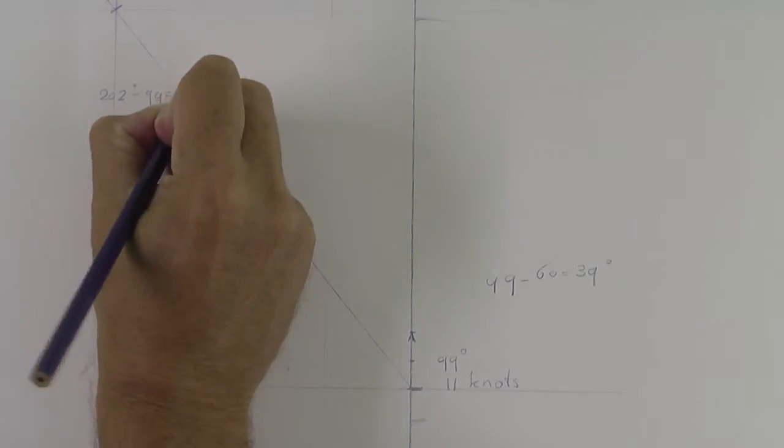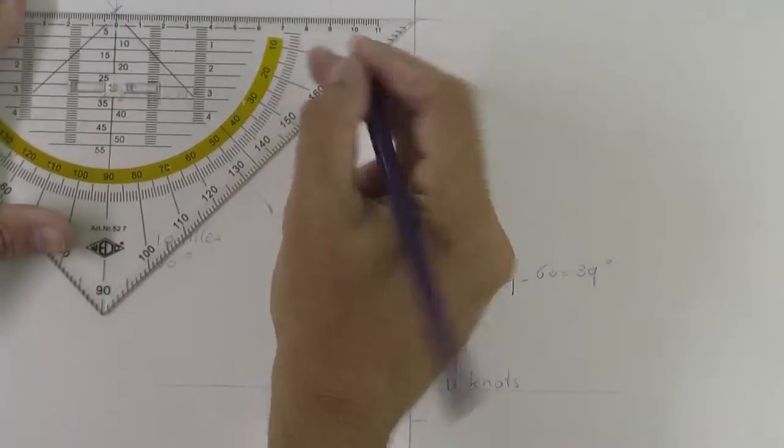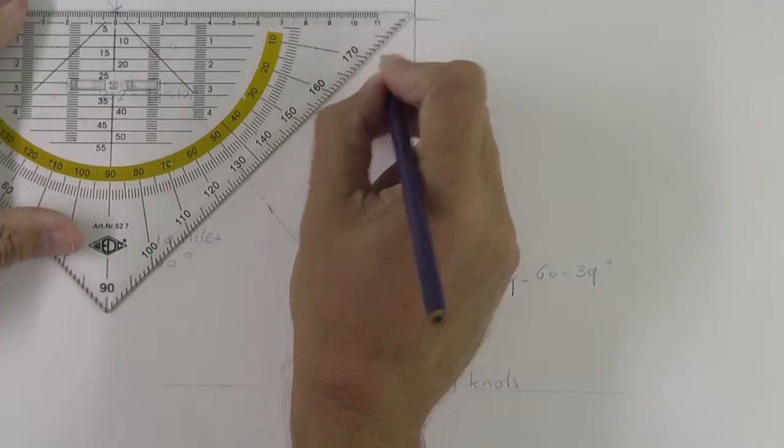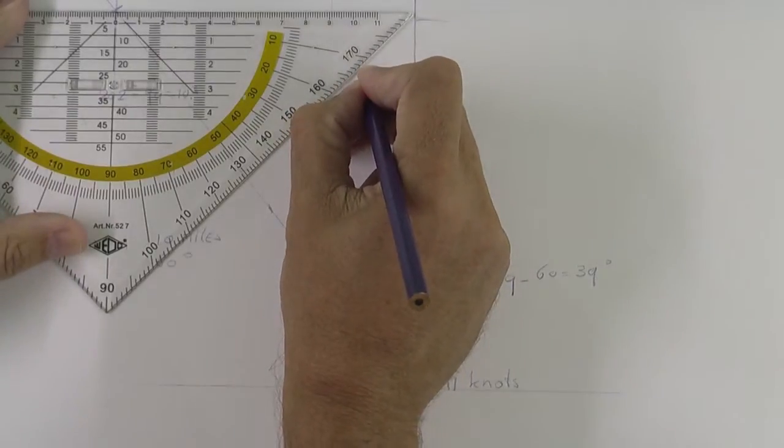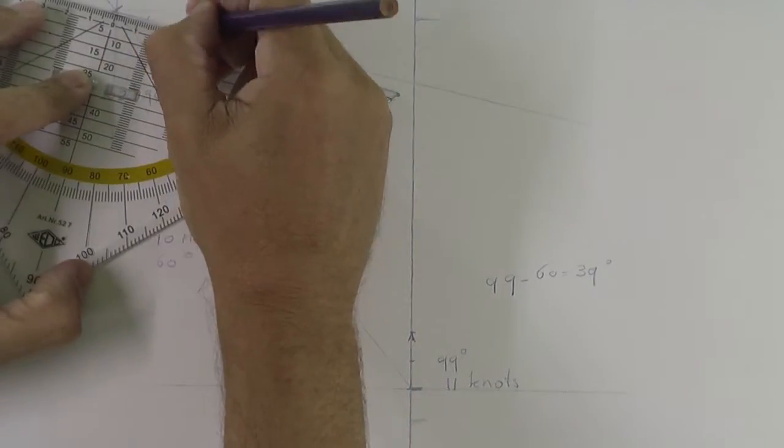The other ship was at 202 degrees with 30 knots. So 202 degrees minus 99 degrees is 103 degrees. So then you have your basic triangle.